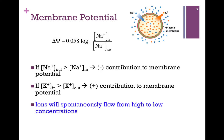Let's take the example of sodium. We know the concentration of sodium is much higher outside the cell, so in that case our ratio becomes less than one, and our membrane potential becomes negative. That is, the sodium gradient contributes to a negative membrane potential. However, in the case of potassium, the concentration is much higher inside the cell, so that contributes in a positive way to the membrane potential.